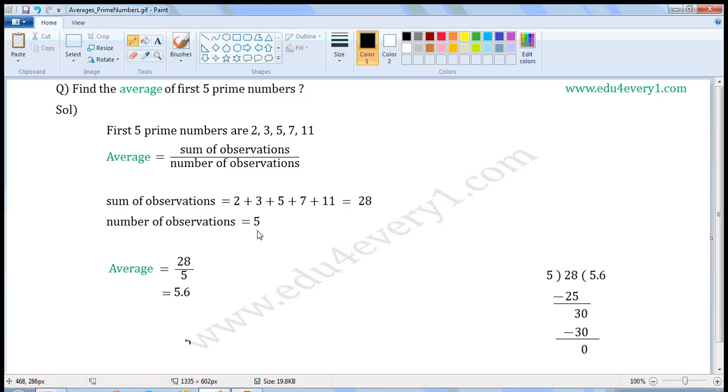Number of observations is equal to 5. As there are 5 observations, number of observations is equal to 5. Now, substitute these values in this formula.